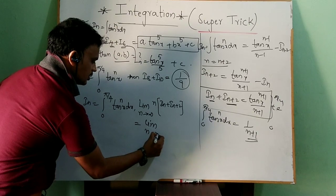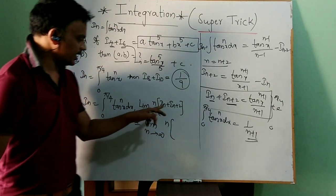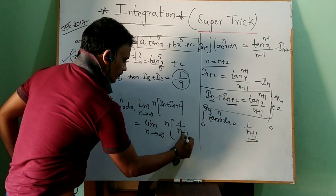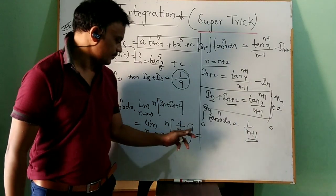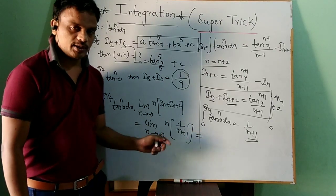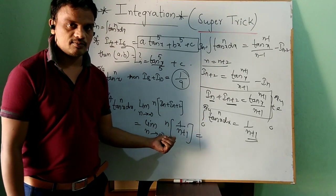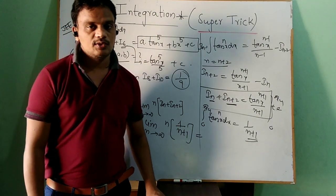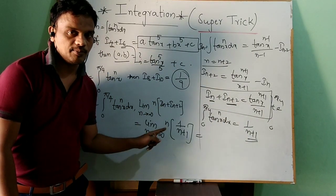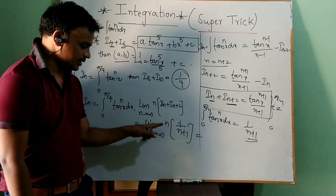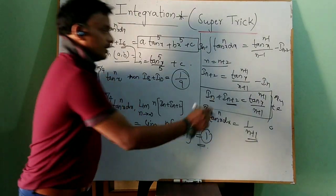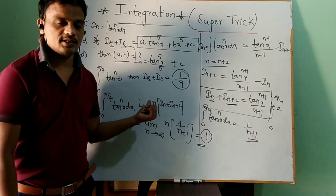For the limit problem: limit as n tends to infinity of n·(i_n + i_{n+2}), with boundaries 0 to π/4, equals limit n→∞ of n·(1/(n+1)) = n/(n+1). Both numerator and denominator have degree 1, so we take the ratio of leading coefficients, which gives 1.